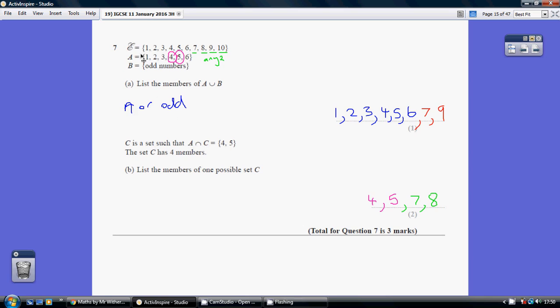Now looking at the numbers in A, 1, 2, 3, and 6 cannot be in C because we're told these numbers here are in A and C, and that doesn't include 1, 2, 3, and 6. So 1, 2, 3, and 6 cannot be in C.